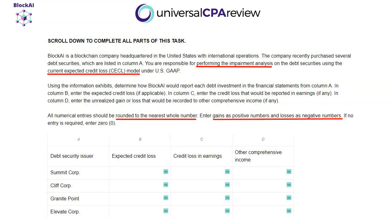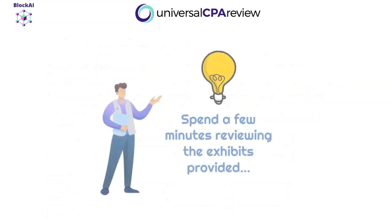All dollar amounts are rounded to the nearest whole number. Anything negative represents a loss — so a credit loss, expected credit loss, or unrealized loss is a negative number. A gain is a positive number, and if there's no entry needed, we still put a zero. After reading the instructions, do a quick peek at each exhibit. We don't need to memorize everything, but we want a general idea of what's provided so that when we go through the questions, we know where to find the information.